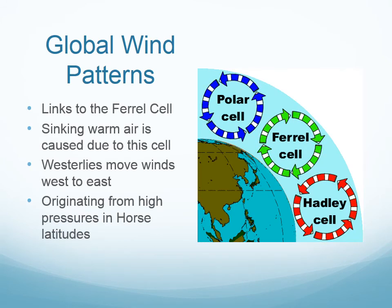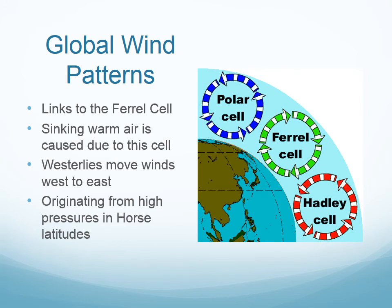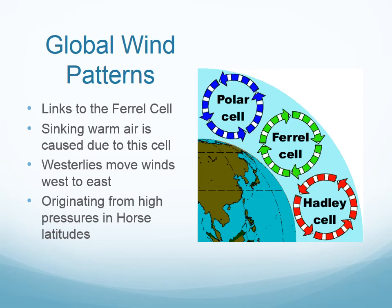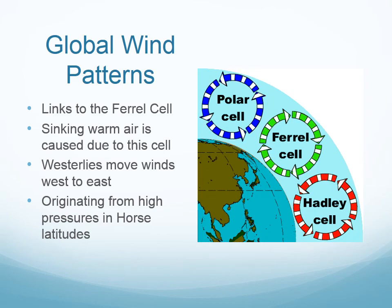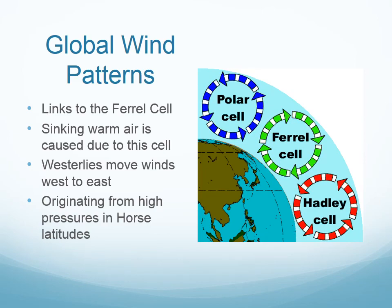Recall from Meteor 6, the Ferrel and Hadley cells. In Chinook winds, the sinking warm air is caused by the Ferrel cell. The winds are moving west to east because of the westerlies, and are originating from the horse latitudes, which are between 30 and 35 degrees north and south, and the high pressures accompanying them.